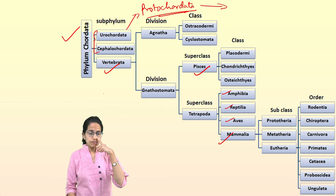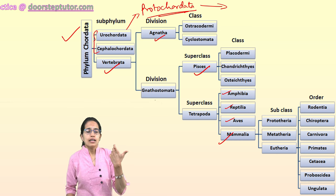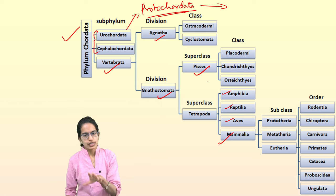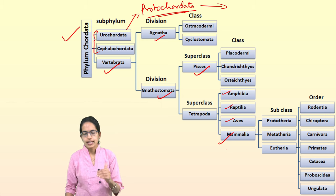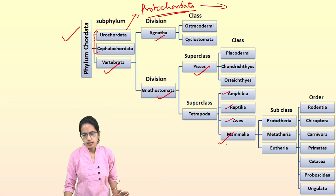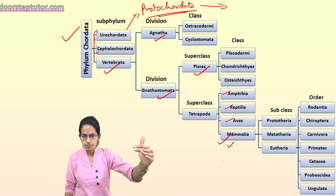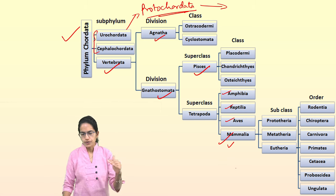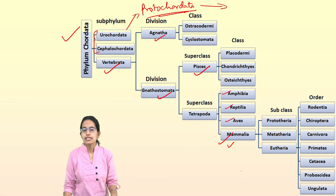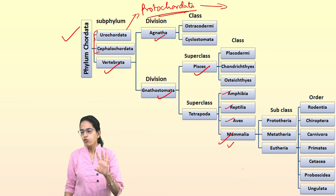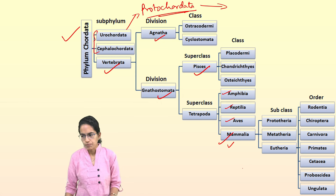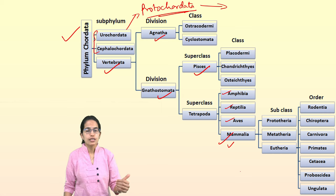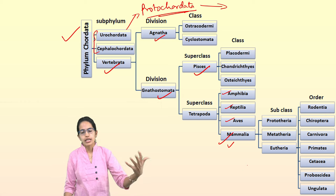Under vertebrate classification we have five classes: Pisces, Amphibia, Reptilia, Aves and Mammalia. Mammalia are the most higher-order organisms among vertebrates. They are warm-blooded animals. They have sweat glands, oil glands (sebaceous glands), external ears, mammary glands and a four-chambered heart. Platypus and echidna are exceptions which are oviparous, but otherwise Mammalia are viviparous. Some mammals, like kangaroo, give birth to poorly developed young ones that require care for a longer period.